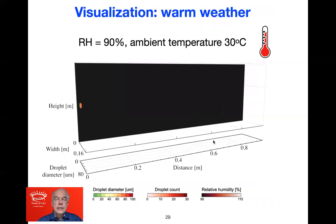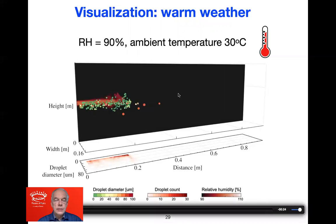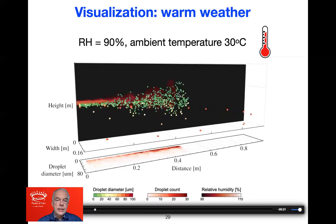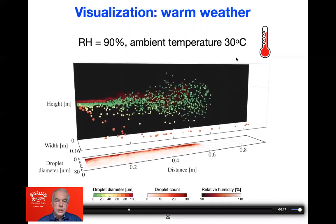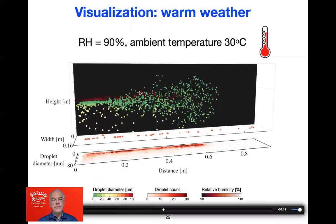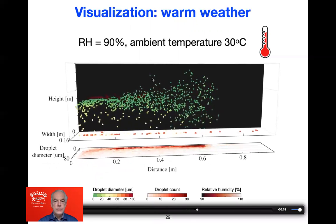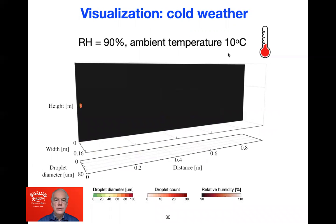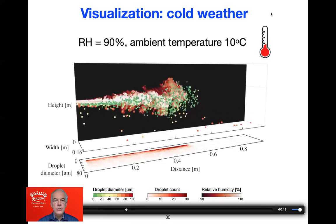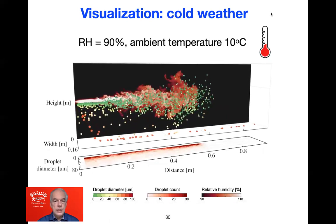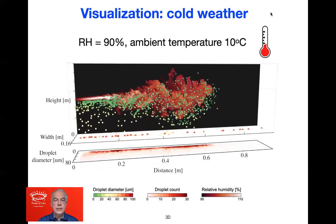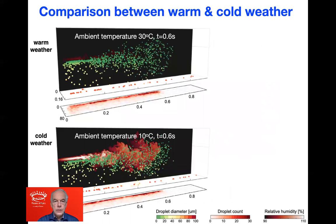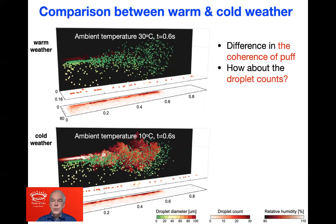What is the role of ambient temperature? Up to now I showed results for 20 degrees ambient temperature. Going up to 30 degrees, the air can take up a lot of moisture, and the humid puff from speaking or coughing vanishes pretty quickly. However, going down to low temperatures of 10 degrees, the picture is very different: the moisture puff has much higher coherence and a much longer lifetime, and therefore the little droplets are protected for a much longer time, as you can see in this movie.